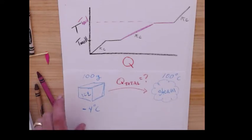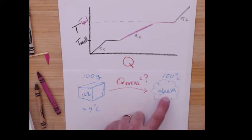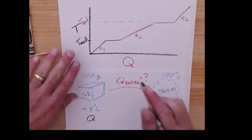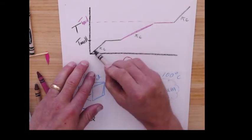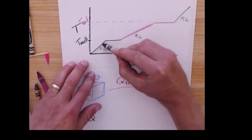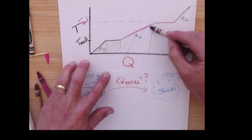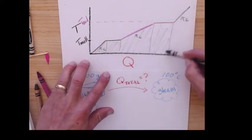So now if I want to take 100 grams of negative four degree C ice and turn it into 100 degrees steam, how much heat do I need? That's my total amount of heat. So I've got to heat it up. I've got to melt it. I have to heat the liquid up and then I have to vaporize it.